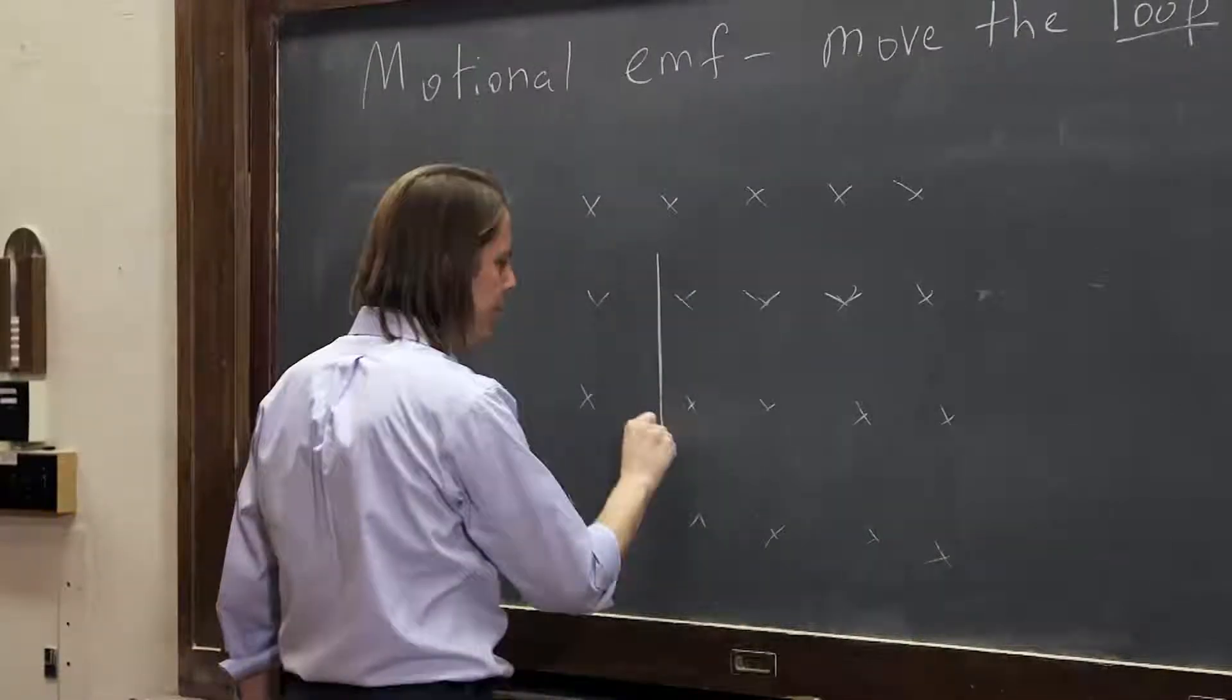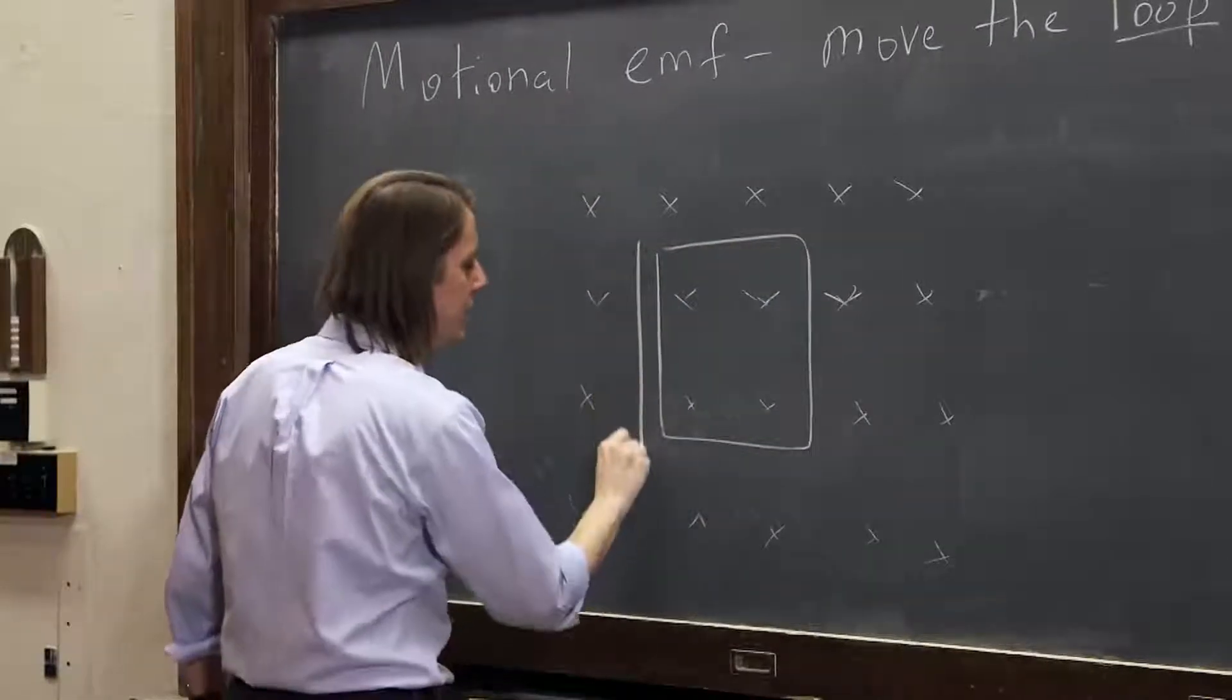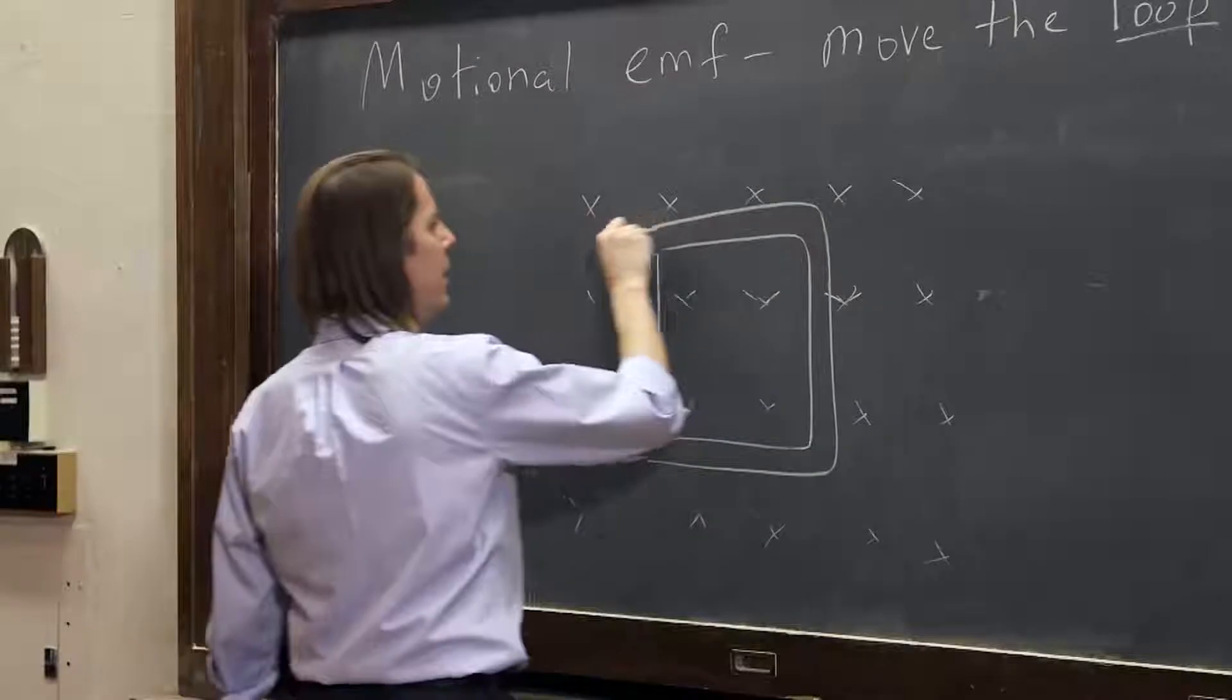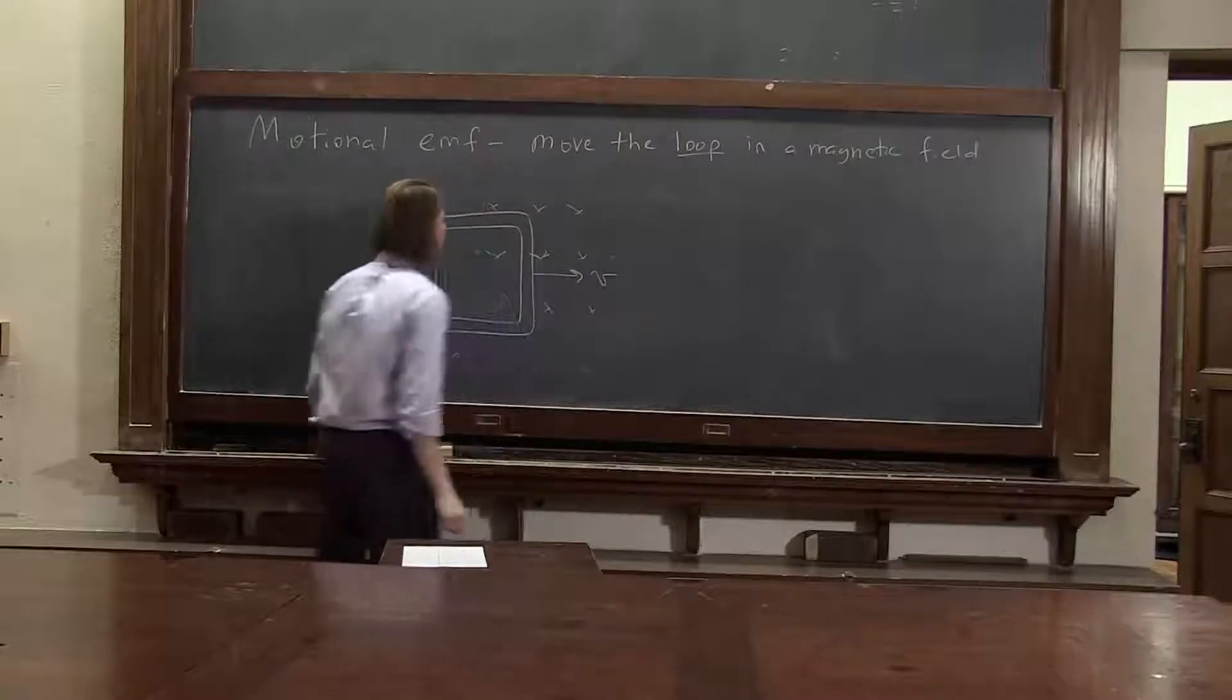Let's do a loop. Let's do a big, thick loop where you can really see its edges. And let's make that move to the right.